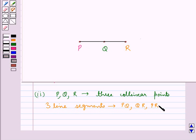So from the given three collinear points P, Q, R, we get three line segments: PQ, QR, and PR.